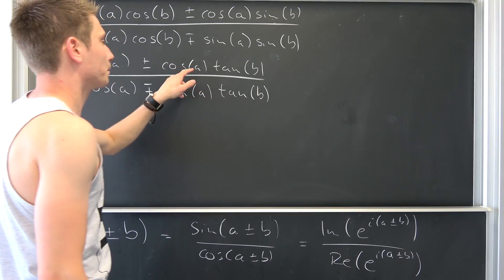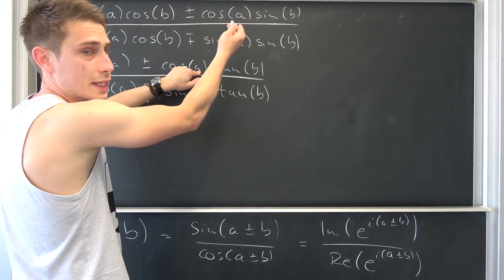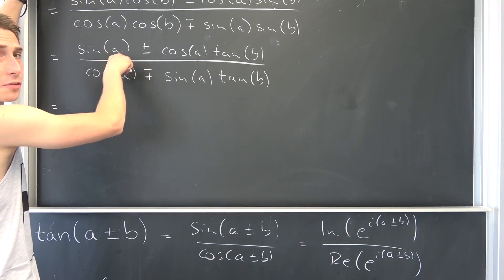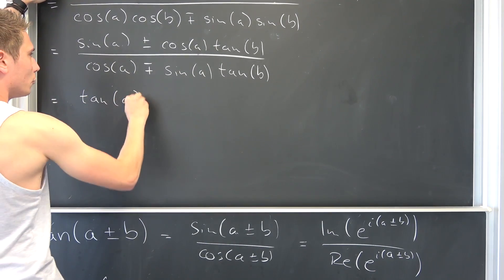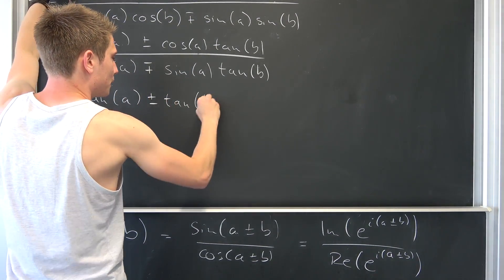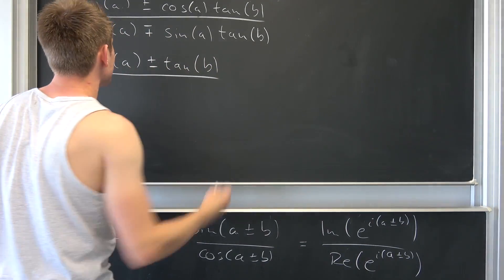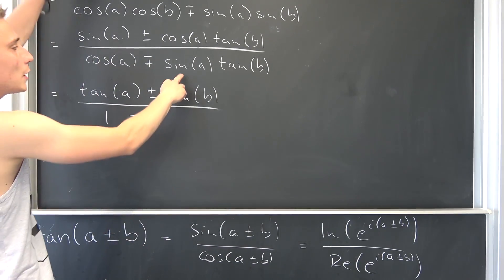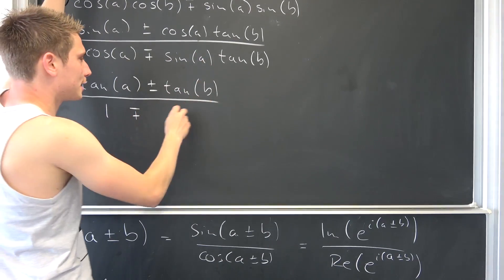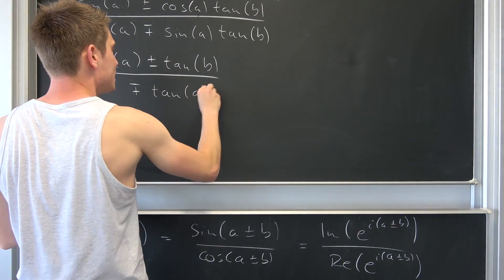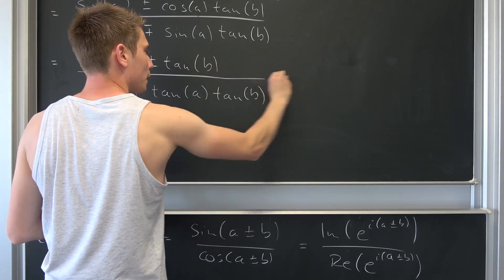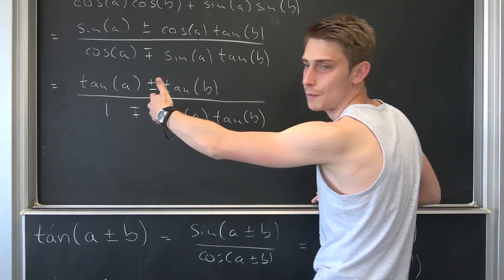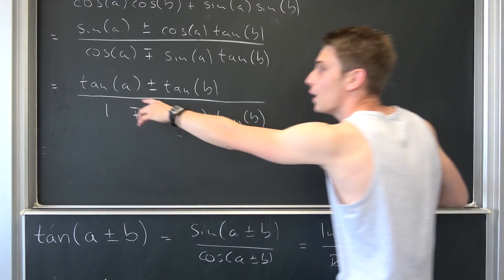Now by factoring out cos a from both numerator and denominator, sin/cos gives us tangent of a. So the numerator becomes tan a ± tan b, and since sin a / cos a is tan a, the denominator becomes 1 ∓ tan a·tan b. This is the tangent addition theorem expressed purely in terms of tangents. You can also factor out the sines instead and be left with the cotangent form.